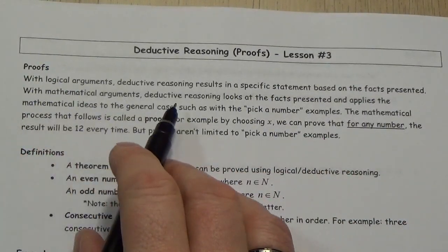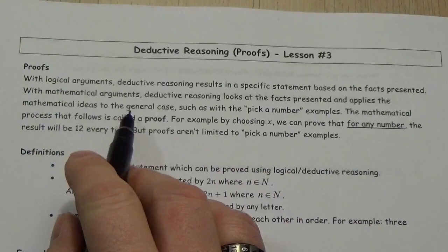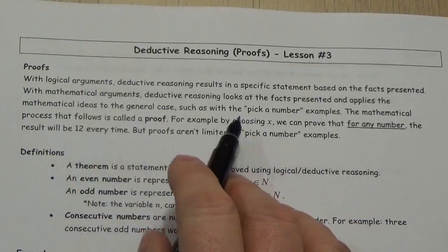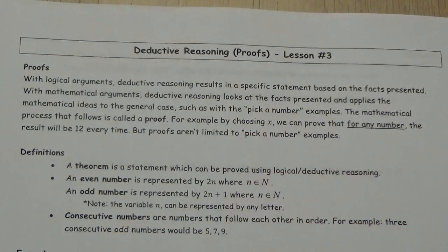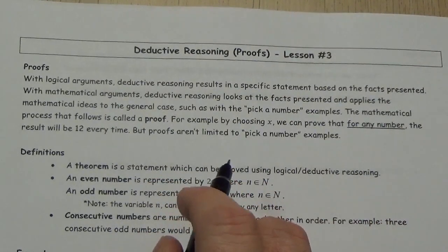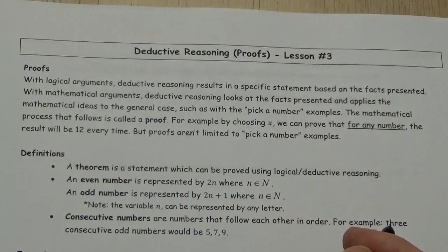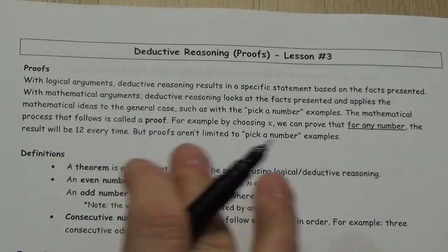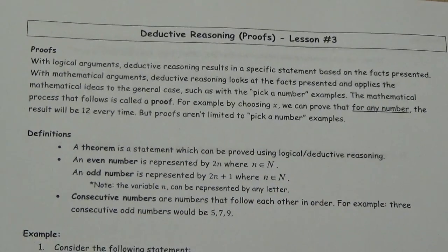With mathematical arguments, deductive reasoning looks at the facts, looks at the statements, applies the mathematical ideas to the general case, such as with the pick-a-number examples from previous lessons, where we chose x instead of a specific number so it can be applied to any number. And then we saw that we got 12 every time. But you can do way more than just pick-your-number proof sorts of examples here.